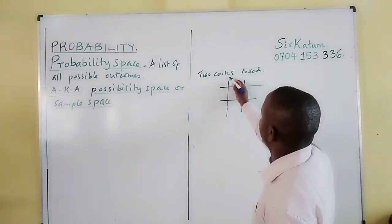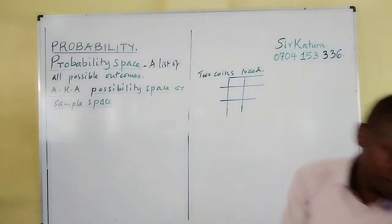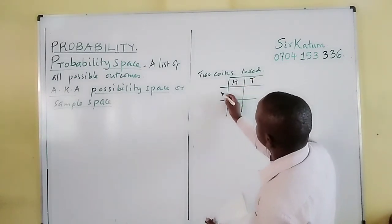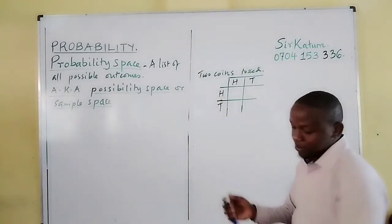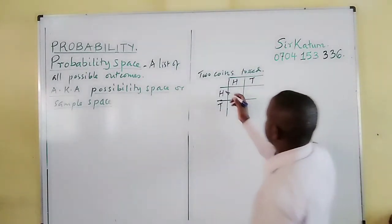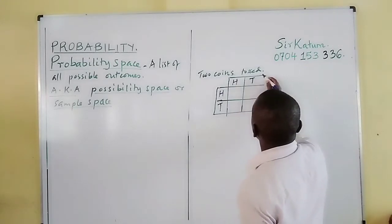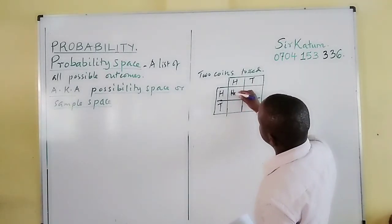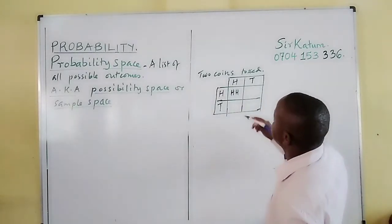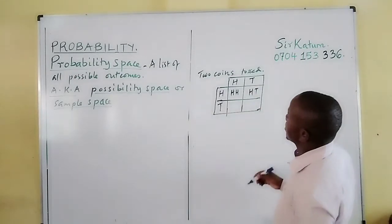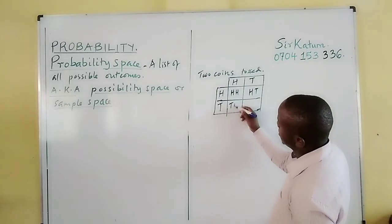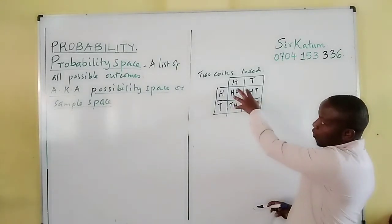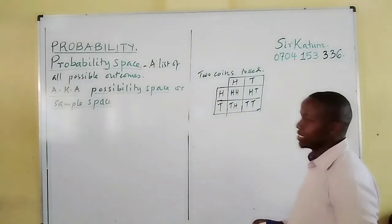For the first coin we can have a head or a tail, and for the other coin we can also have a head or a tail. So the outcomes can be listed as: head and head, head and tail, tail and head, or tail and tail. These are what we call possible outcomes.